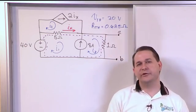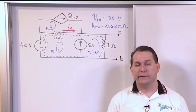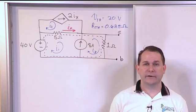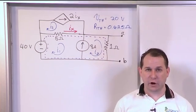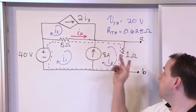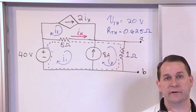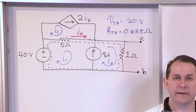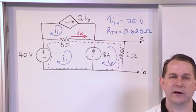The method we used in the last section is the granddaddy way. It's the way you always learn first and it's always correct. That method involves calculating the short circuit current between A and B and then using Ohm's law to calculate the Thevenin resistance. That's always going to work, so if you get stuck, use it.